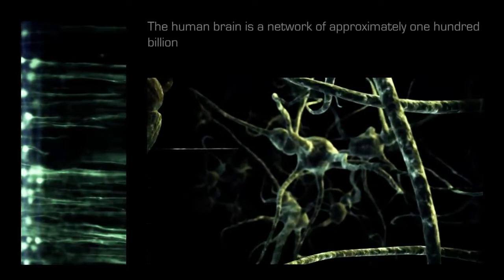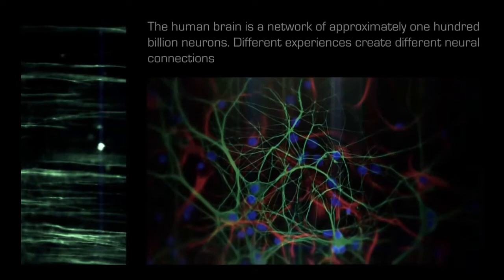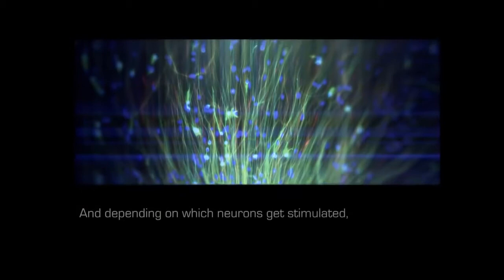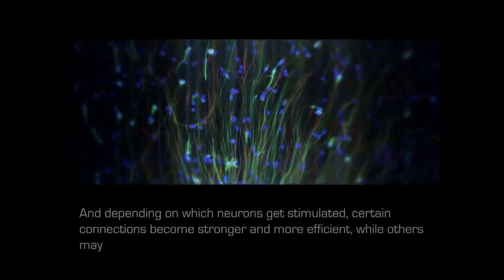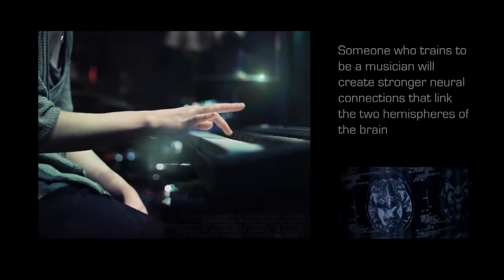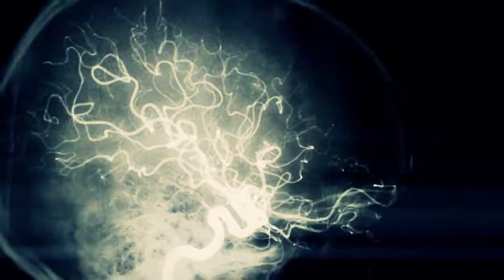The human brain is a network of approximately 100 billion neurons. Different experiences create different neural connections which bring about different emotions. And depending on which neurons get stimulated, certain connections become stronger and more efficient, while others may become weaker. This is what's called neuroplasticity. Someone who trains to be a musician will create stronger neural connections that link the two hemispheres of the brain in order to be musically creative.